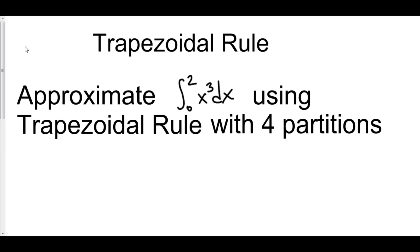Well, if we're going from 0 to 2, and we have 4 partitions, that means that each of my partitions has a width of 2 over 4, which is just 0.5.